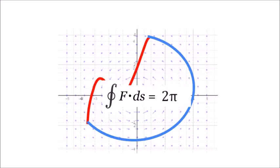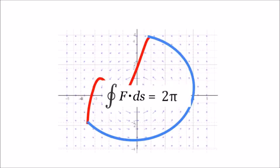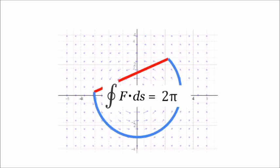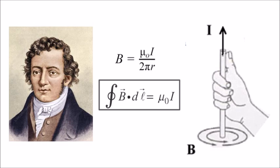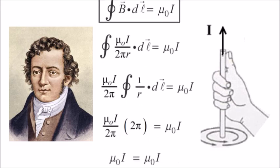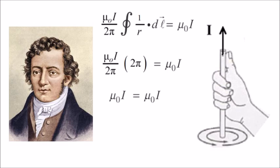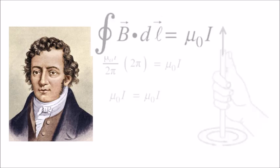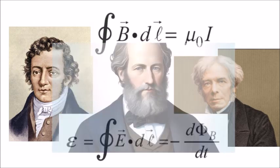No matter what path you choose around that centerpiece, it's the same two pi. This special field is the magnetic field around a current-carrying wire. Its direction is the whirlpool direction; the magnitude is inversely proportional to r. And this result is Ampere's law — the closed integral of that magnetic field over a path is mu-naught times the enclosed current. Maybe a similar law named after Faraday could help Maxwell see the light.